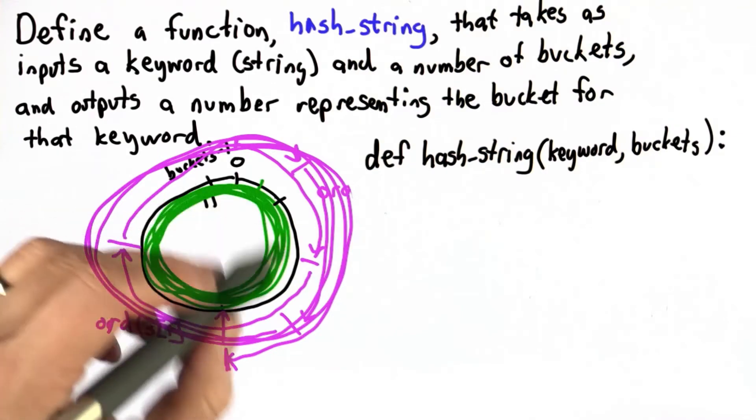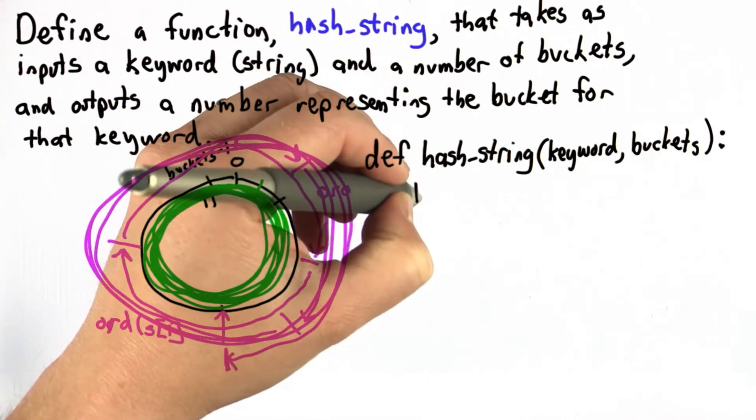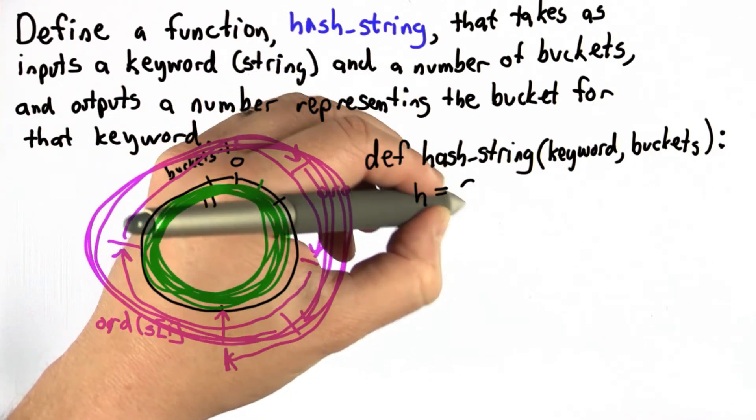And we're going to keep track of where we are in the circle. We need to introduce a new variable to do that, and we should start at position 0. So we'll initialize that variable. We'll use h to represent the hash, and we'll initialize that to 0.